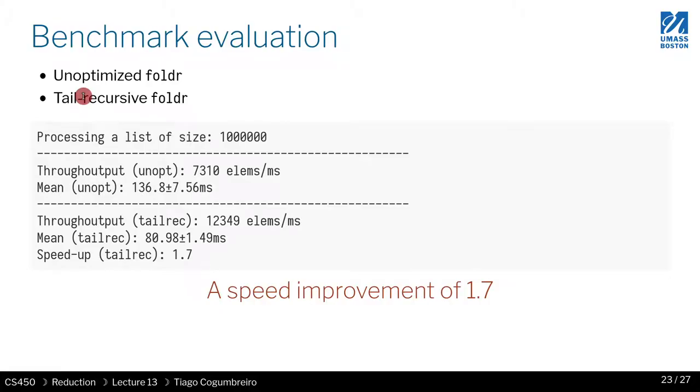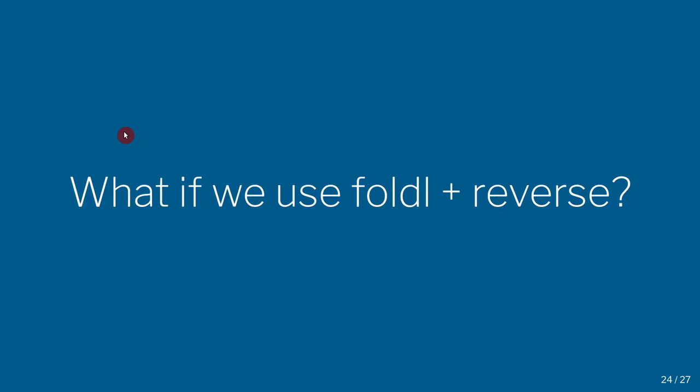One thing you might be wondering is: what if I combine two functions that are tail recursive? I could just apply fold left because, as we saw, when I implemented map I implemented another version called pam, which was just map that reverses the list.